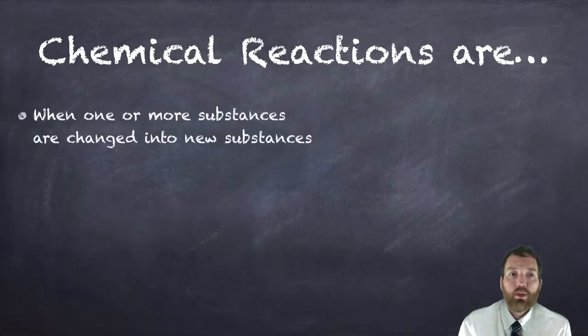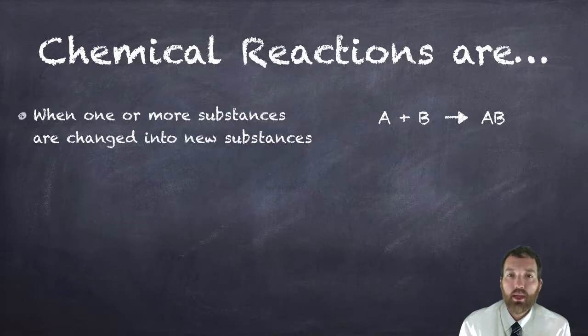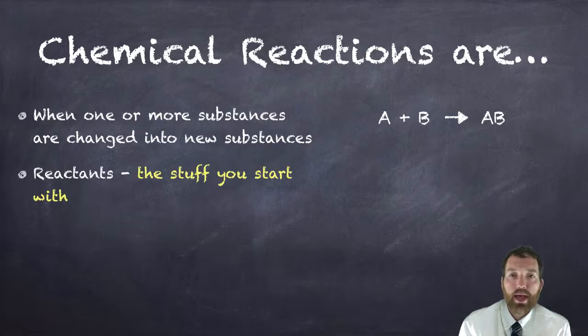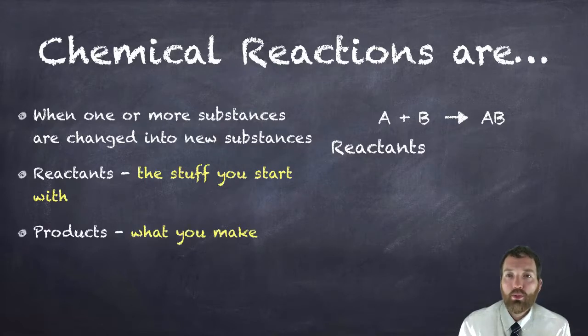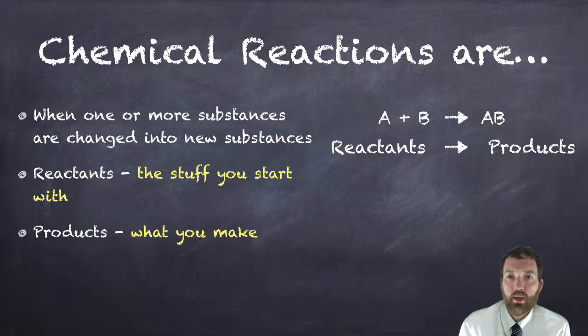Chemical reactions are when one or more substances are changed into new substances. For example, here I have a hypothetical equation: A plus B makes AB. Our reactants is the stuff that you start with, the stuff on the left-hand side of the arrow. A plus B, or A and B, are reactants. The product is what you make. So what we made was AB. AB is different. It's a different composition. There's a bond there that's implied by those two elements being next to each other. That makes it new and different from A or B.